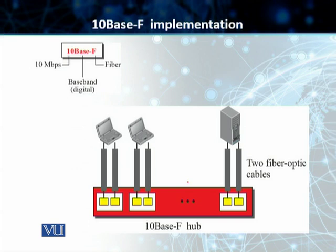Lastly, we have the 10BaseF implementation. 10BaseF uses a 10BaseF hub in the middle and also uses a star topology. The stations are connected to the hub using two fiber optic cables. The 'F' in 10BaseF represents fiber. We have two channels — one for sending and one for receiving — and any collisions in this case also happen in the hub.